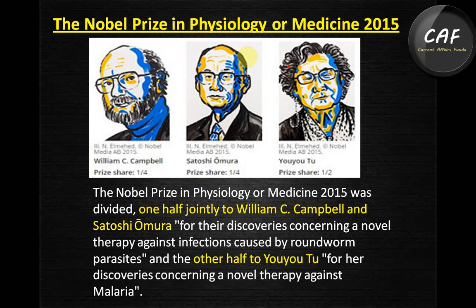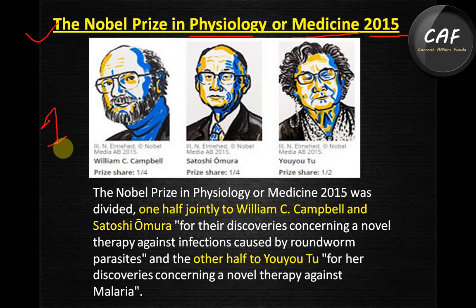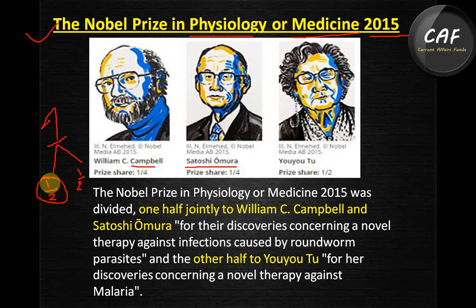The Nobel Prize in Physiology or Medicine 2015 is very interesting. The award has one unit — half was given to two scientists and the other half to one scientist. William C. Campbell and Satoshi Omura won half the prize jointly, so each received one-quarter of the prize share.